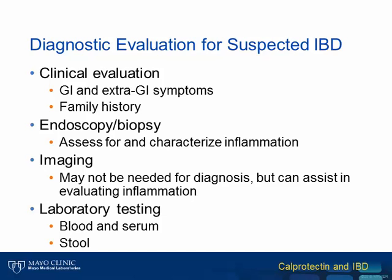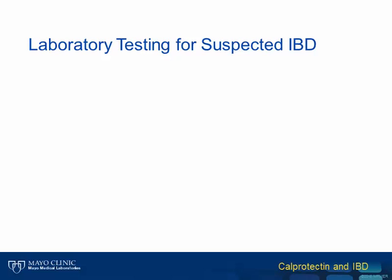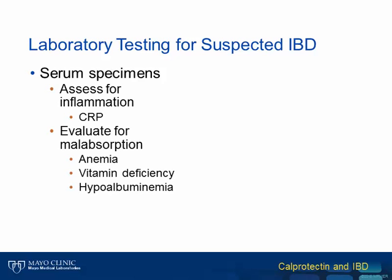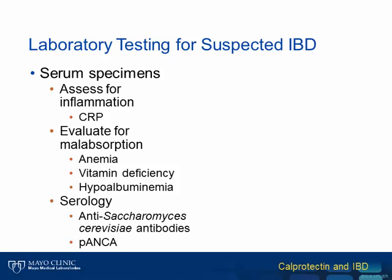The laboratory testing for IBD involves both serum and stool samples. The purpose of serum testing includes assessing for systemic inflammation, such as through measurement of C-reactive protein, and evaluating for malabsorption, including iron-deficient anemia, vitamin deficiency, and low protein concentrations. In addition, serology testing may be considered, specifically antisaccharomyces cerevisiae antibodies and perinuclear antineutrophil antibodies, or P-ANCA.